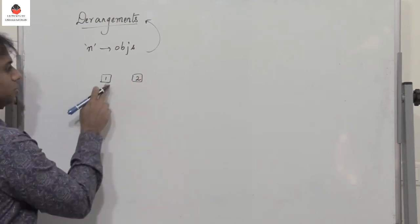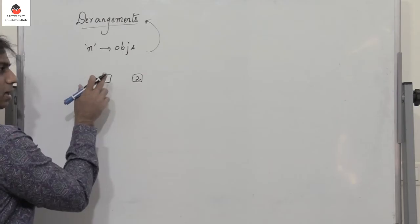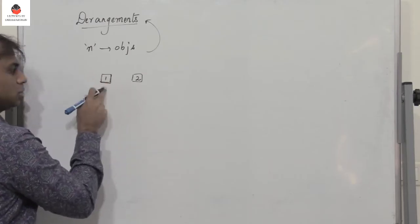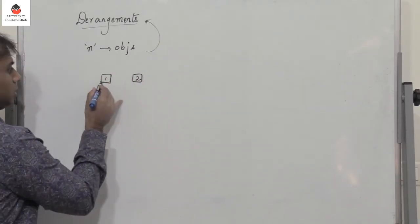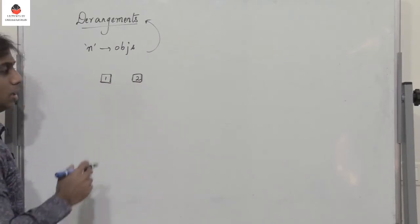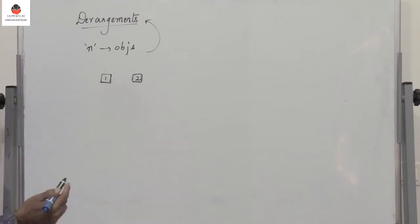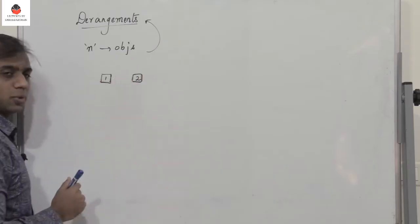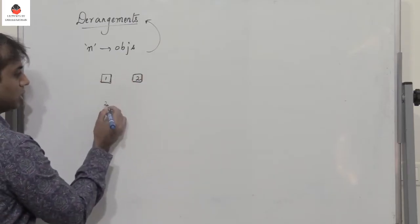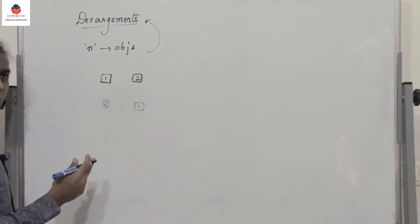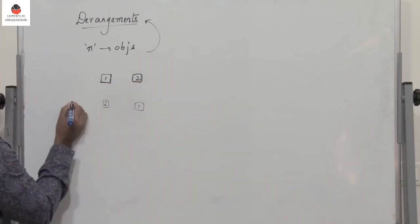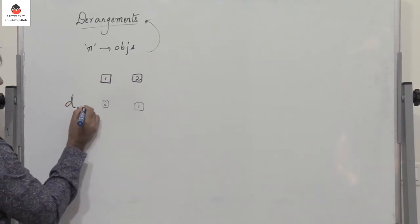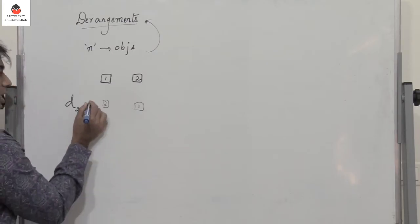For example, let us consider two objects, 1 and 2. This happens to be 1's original position and this happens to be 2's natural position. Now if these objects have to be placed such that 1 is not in its position and 2 is not in its position, I can place 2 here and 1 here. So there is only one way — D2 equals 1.